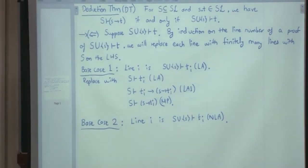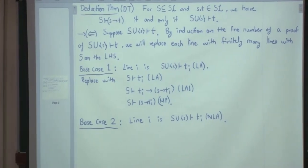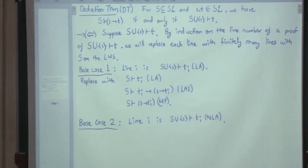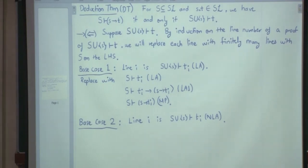So if there is a proof of S implies T from capital S, then we also have a proof of T from S union singleton small s. That part we have seen, now we are looking at the converse.